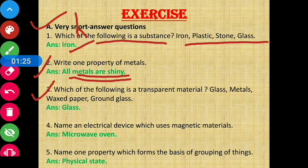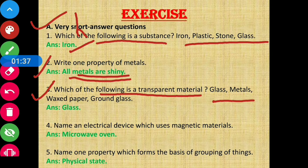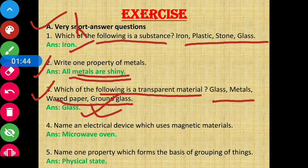Question number 3: Which of the following is a transparent material — glass, metal, waxed paper, or ground glass? The answer is glass. Glass is a transparent material.